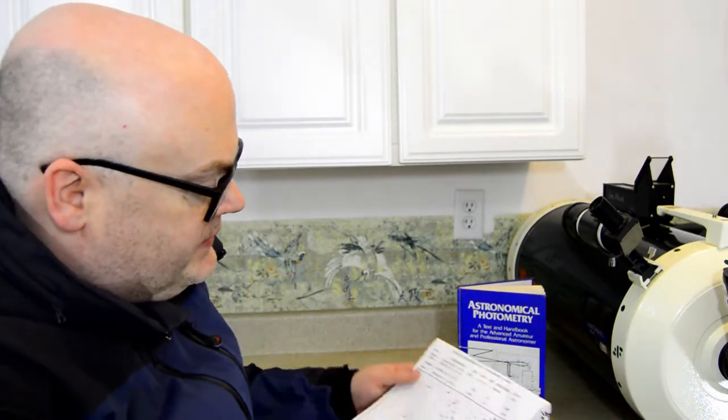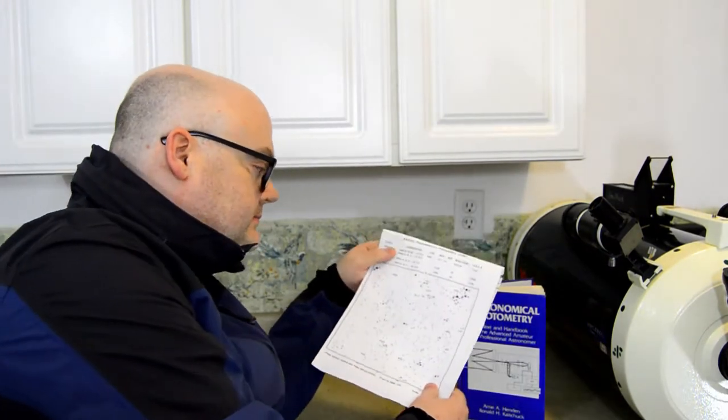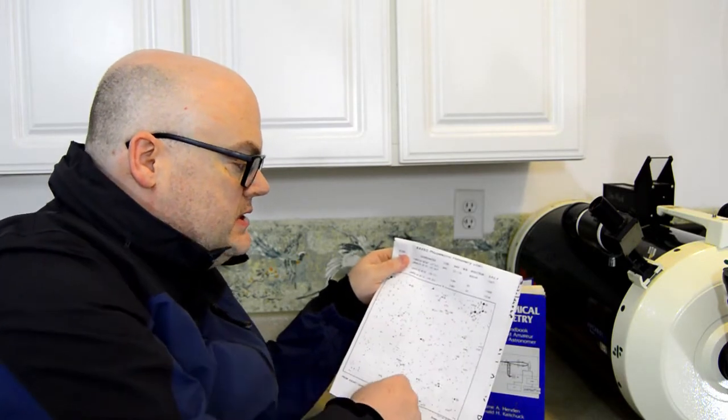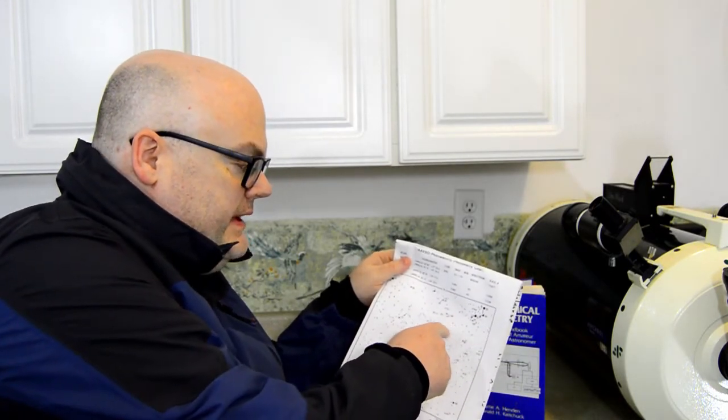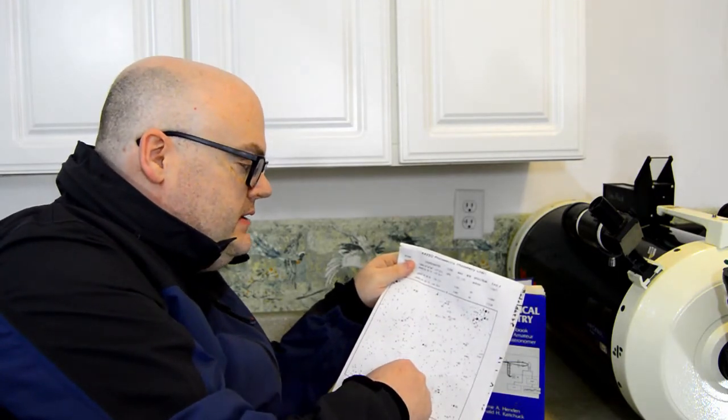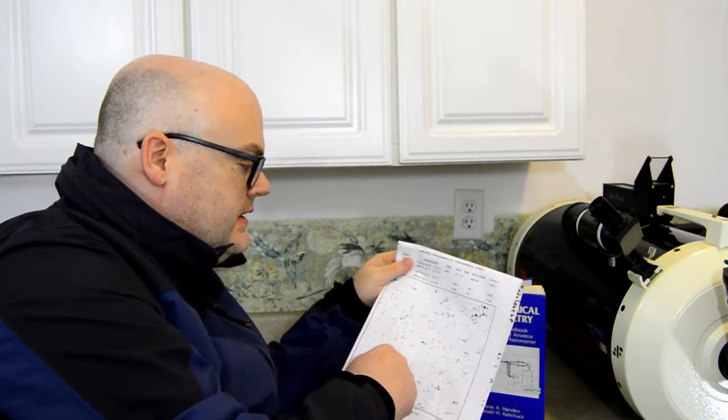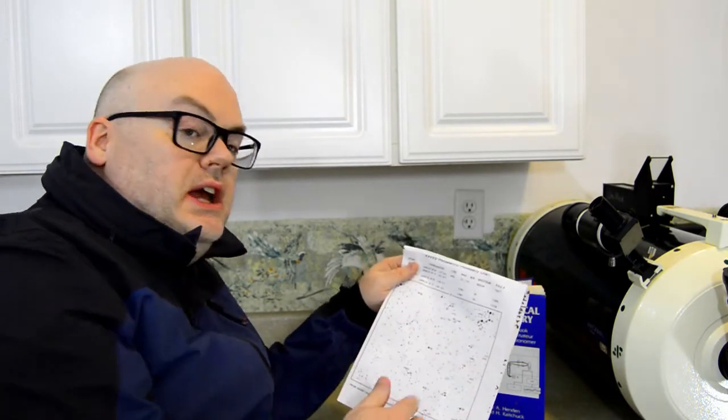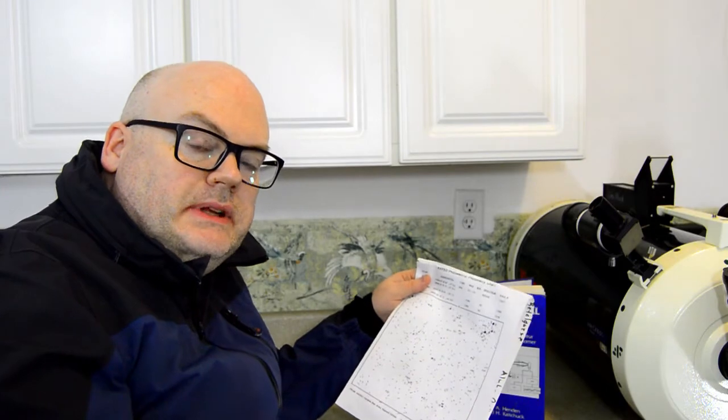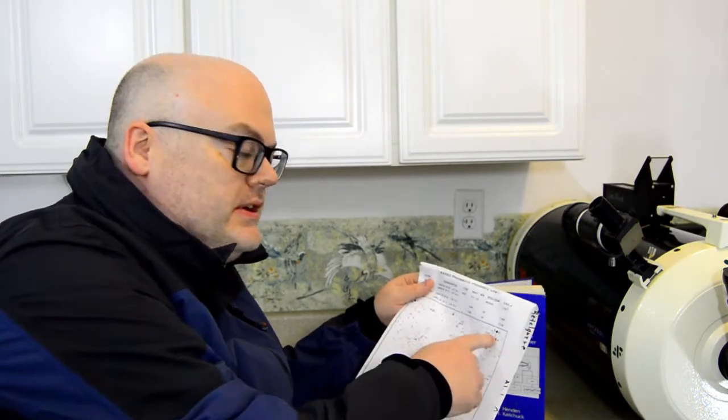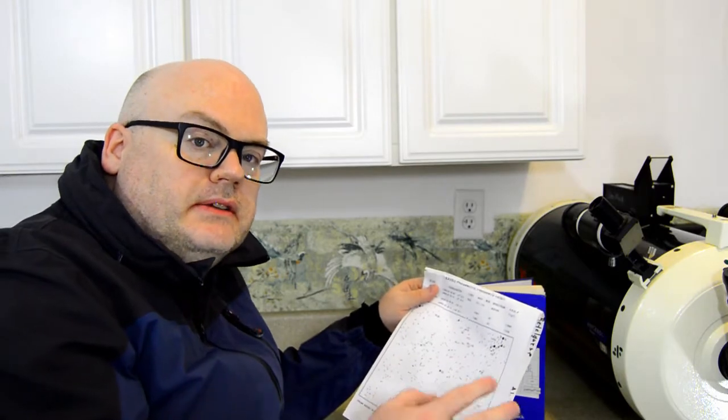So what we would do, if we were going to do some photometry, we'd start out with like a little patch of sky where there are no stars, and we'd take our sky reading. Then we'd go to the comparison star, take a reading, back to the sky, take a reading, over to the target, take a reading, back to the sky, and we'd keep doing this until we had enough integration time on the target star and the comparison that we knew we'd get good results.